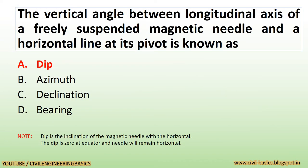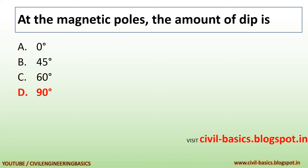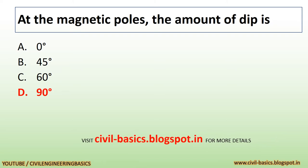The vertical angle between the longitudinal axis of a freely suspended magnetic needle and a horizontal line at its pivot is known as dip. Note: dip is the inclination of the magnetic needle with the horizontal. The dip is zero at the equator and the needle will remain horizontal. At the magnetic poles, the amount of dip is 90 degrees.